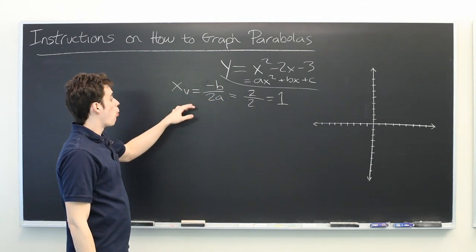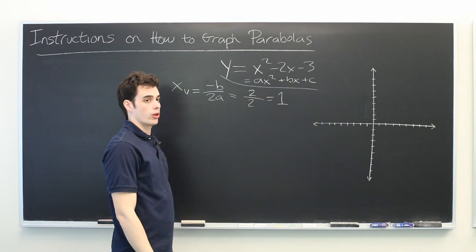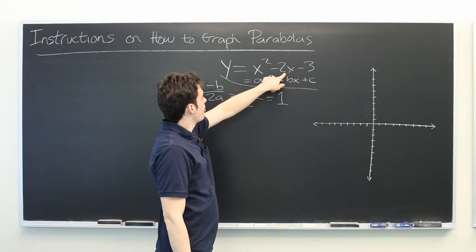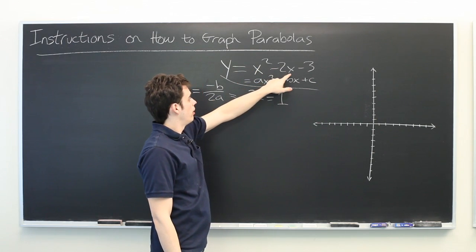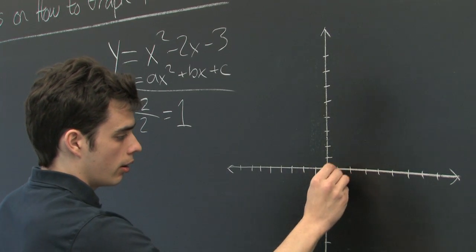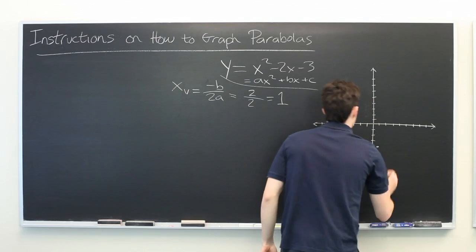Now to get the y coordinate of the vertex, we simply take this number and plug it back into our original equation. 1 squared is 1, minus 2 is negative 1, minus 3 is negative 4. So we go to 1, negative 4, and that's our vertex.